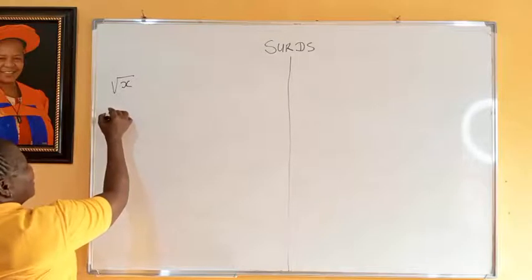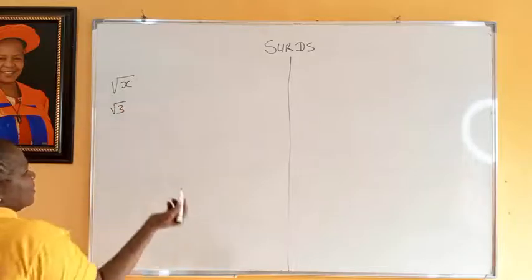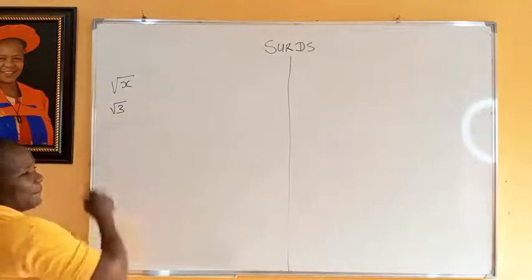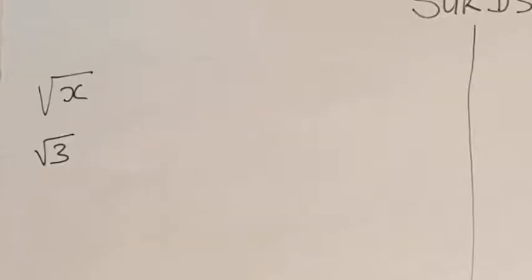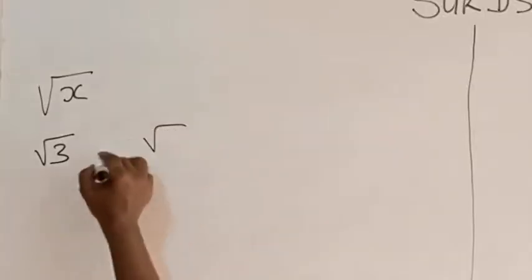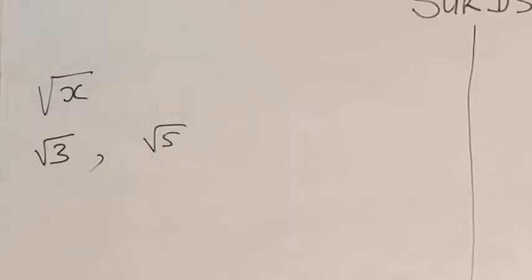For example, square root of 3 — 3 is not a perfect square, so it is a surd. Square root of 5 — it's not a perfect square, so square root of 5 is a surd. They are all surds.